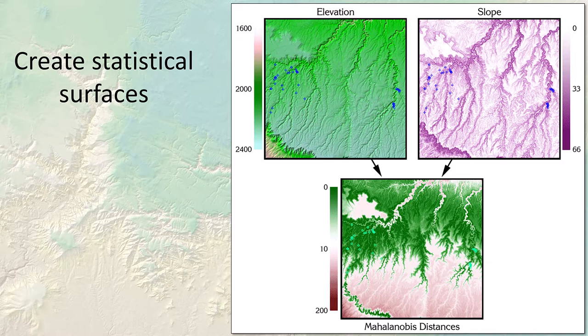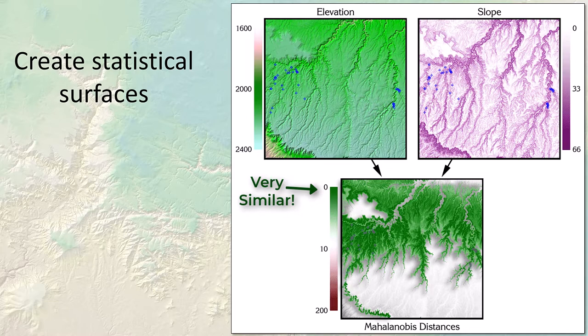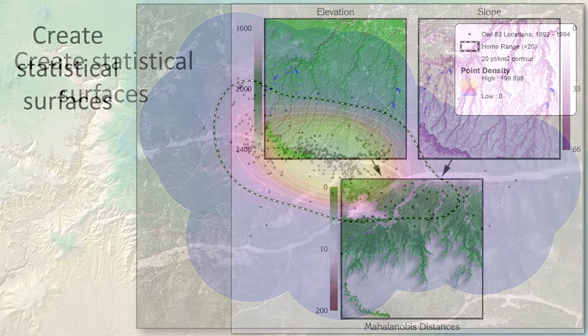We can generate statistical surfaces that describe the landscape. This particular example is what we call a Mahalanobis distance — it defines the landscape in terms of how similar any point is to some ideal combination of landscape variables. We had a bunch of spotted owl locations, and at each location we measured slope and elevation. Based on those two variables we can classify the entire landscape by its similarity to what the owls seem to have selected. This kind of analysis is useful for identifying potential areas where an animal might be found, helping plan future survey efforts, and identifying what parts of the landscape are most important to protect for threatened and endangered species.